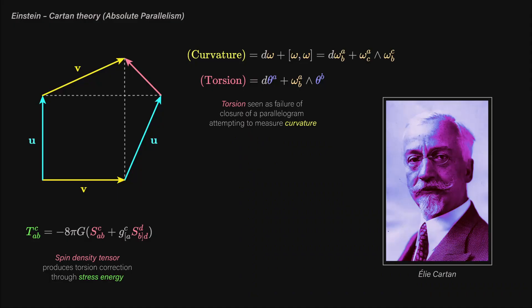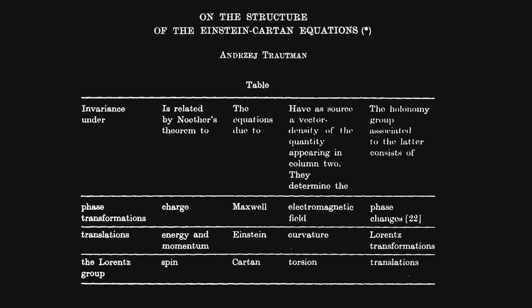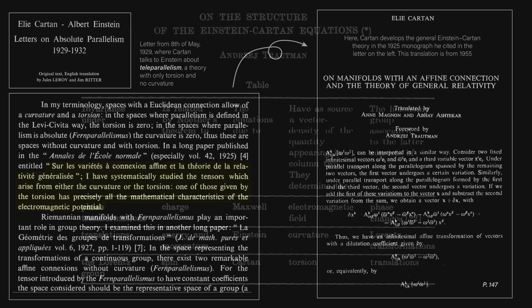General relativity states that if you look at the momenergy content of a region, that relates to the curvature of that region, which is known as the Einstein-Cartan moment of rotation. But what Einstein also said with Cartan in Einstein-Cartan theory is that if the first invariant of momenergy makes such a difference, the second invariant, spin, should also shape spacetime in some way.